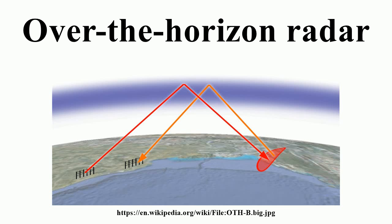The United States Air Force Rome Laboratory had the first complete success with their own FPS-118 OTH-B. A prototype with a 1-megawatt transmitter and a separate receiver was installed in Maine, offering coverage over a 60-degree arc between 900 and 3,300 km. A permanent transmitting facility was then built at Moscow AFS, a receiving facility at Columbia Falls AFS, and an operational center between them in Bangor, Maine. Coverage could be extended with additional receivers, providing complete coverage over a 180-degree arc. GE Aerospace was awarded the development contract, expanding the East Coast system with two additional sectors, while building another three-sector system on the West Coast, a two-sector system in Alaska, and a one-sector system facing south.